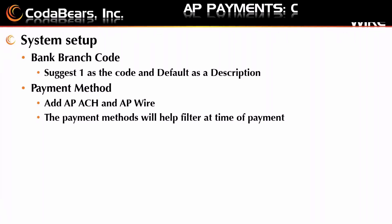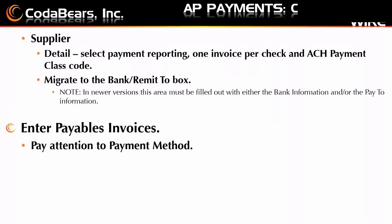The next thing you're going to have to do is in your system setup, put in your payment methods. For this purpose, you would add an AP ACH and an AP wire. If there are two different files, these payment methods will be used to help filter at the time of payment. We're also going to go to the supplier and set up detail so we can select the payment reporting — for example, one invoice per check, especially for an ACH or wire — and an ACH payment class code.